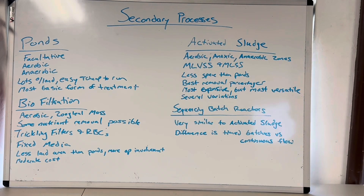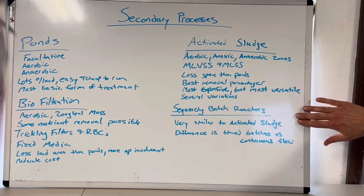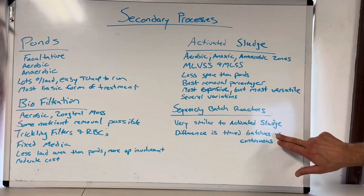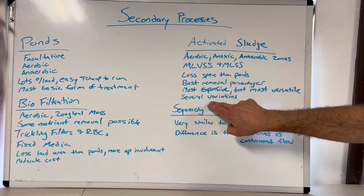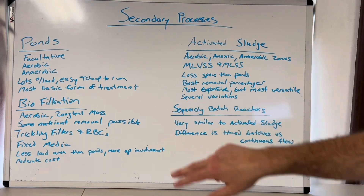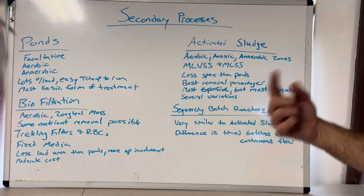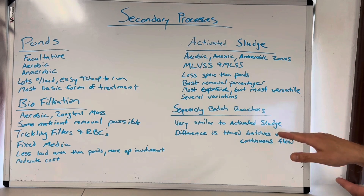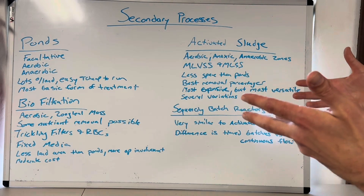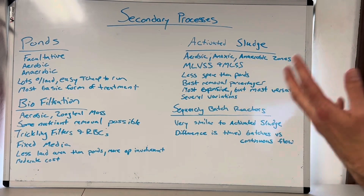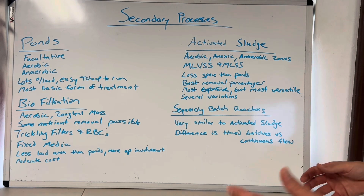Then you have sequencing batch reactors — almost the same technology as activated sludge, but the biggest difference is they are timed batches versus continuous flow. In an activated sludge plant, WAS and RAS — waste activated sludge and return activated sludge — create a constant return to the front of aeration with a continuous effluent stream. In SBRs, the flow equalizes, then it does its biological reaction with aeration, settles — the aeration basin acts as its own clarifier — and then decants.